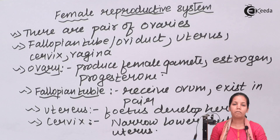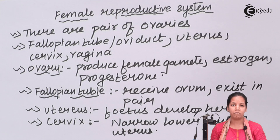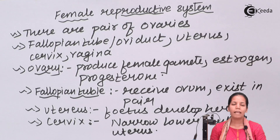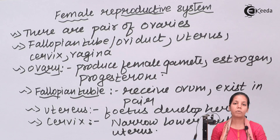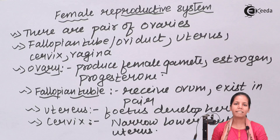If we closely observe the female reproductive tract, it consists of ovaries, fallopian tubes or oviduct, uterus, cervix and vagina. The main responsibility here is to produce ovum or egg cells which will further fertilize with the sperm to form the diploid zygote — basically the process of fertilization.